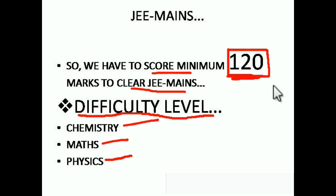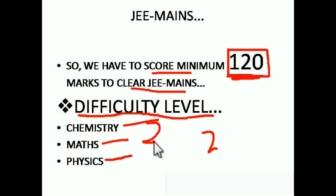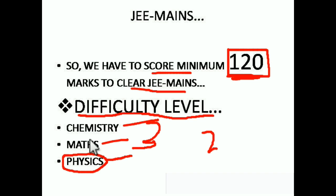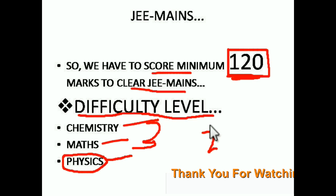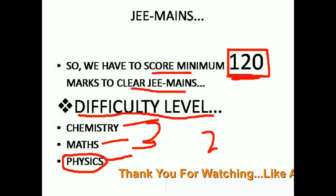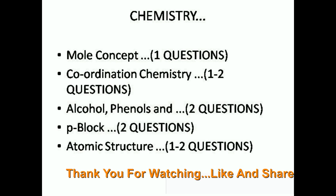How are we going to score 120? Every student has at least two subjects where they can score 50 to 60 marks — whether that's Chemistry and Math, Math and Physics, or Chemistry and Physics. If you are weak in Physics, score 60 in Chemistry and Math and just 10 to 20 marks in Physics, and you'll cross 130 and clear JEE Mains. I'm going to tell you which topics to cover to score at least 50 to 60 marks in each subject.